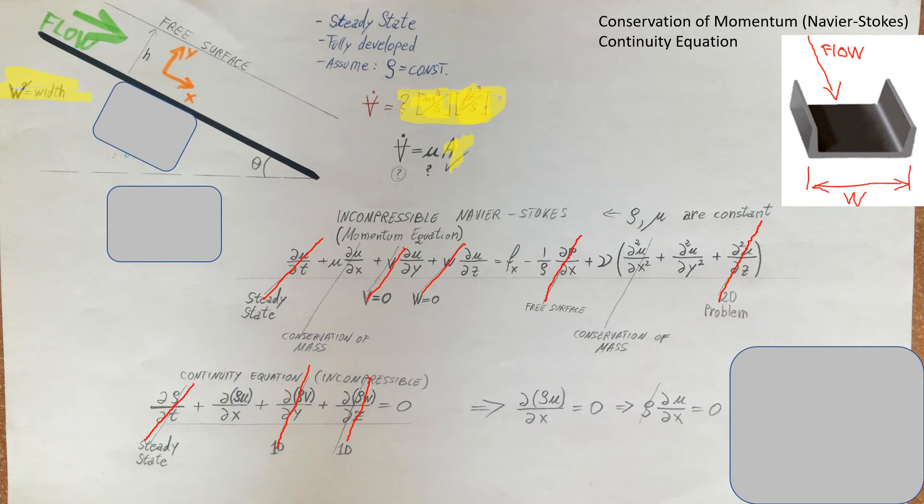We factor out density. Density is constant. We can just cross it out. So, therefore, we have this equal 0. Therefore, we can come back and confidently cross it out because the conservation of mass told us that it is okay to do so.